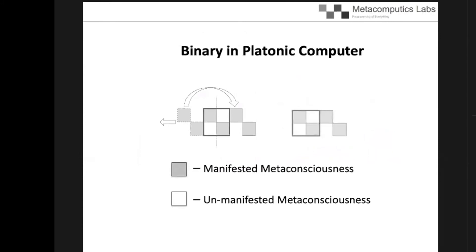In a platonic computer, the binary switch is a metaphysical one made of matter consciousness. Manifested matter consciousness is on and unmanifested matter consciousness is off. So we have a switch also made of matter consciousness.